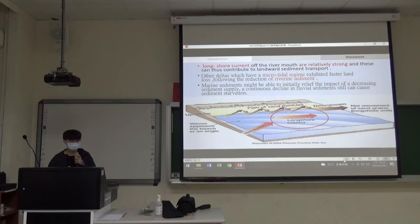Let's go to the discussion. Because Changjiang Delta has longshore currents near the river mouth, shown in this picture, it can cause marine sediment to accumulate at the estuary. These longshore currents are relatively strong and can contribute to landward sediment transport. But other deltas which have microtidal regions—places with weak wave, tidal, or current—will erode faster after reduction of fluvial sediment. Fluvial sediment means sediment that comes from rivers, not the ocean. Marine sediment might initially relieve the impact of decreasing sediment supply, but continuous decline in fluvial sediment can still cause sediment starvation.